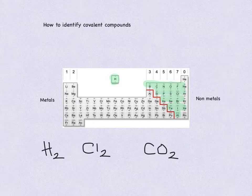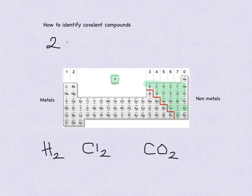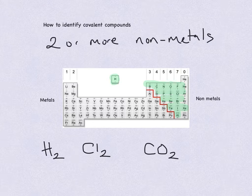I've not really included group 0, because they are noble gases — they're inert. Although some, with a lot of work, such as xenon, can form covalent compounds, but generally on the whole they don't. So our rule for covalent compounds is two or more non-metals which are chemically bonded.